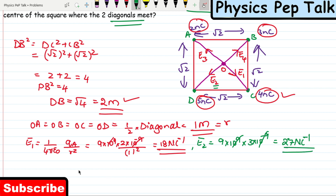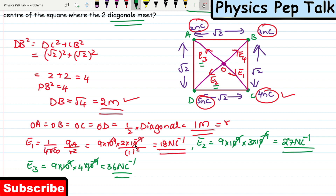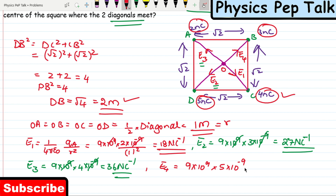E3 equals 1 by 4 pi epsilon naught times QC by R squared. QC is 4 nanocoulomb, so E3 equals 9 into 10 power 9 times 4 into 10 power minus 9 divided by 1 squared, giving 36 Newton per coulomb. E4 equals 1 by 4 pi epsilon naught times QD by R squared. QD is 5 nanocoulomb, so E4 equals 9 into 10 power 9 times 5 into 10 power minus 9 divided by 1 squared, giving 45 Newton per coulomb.